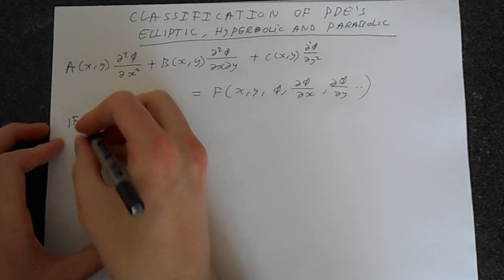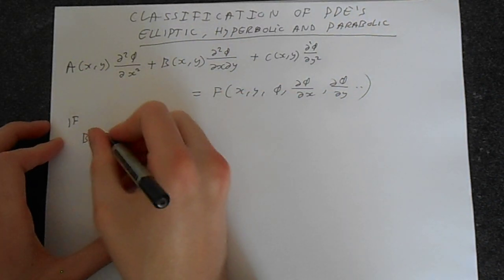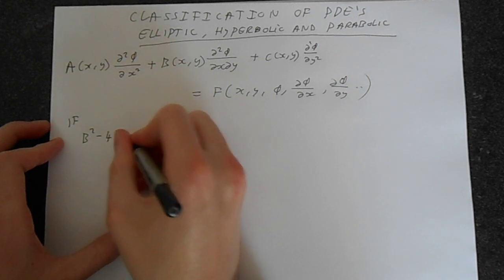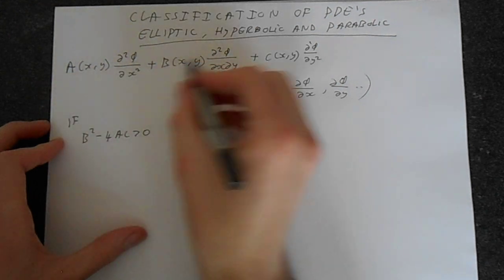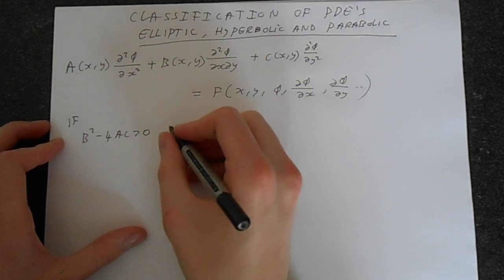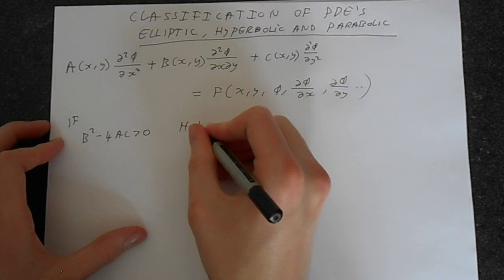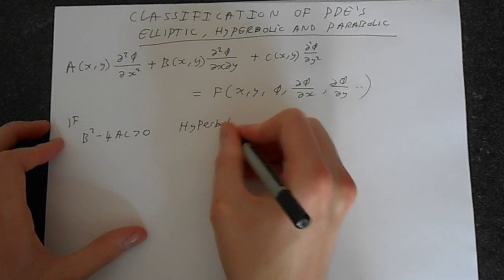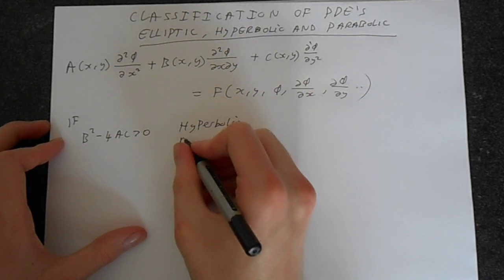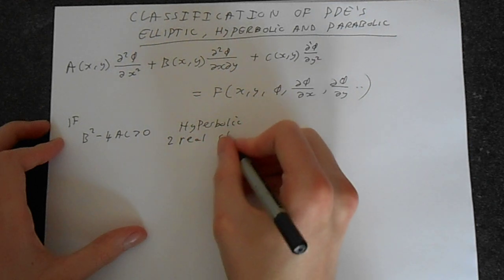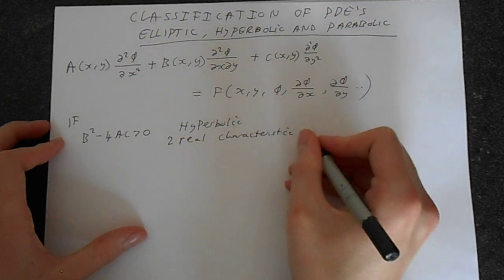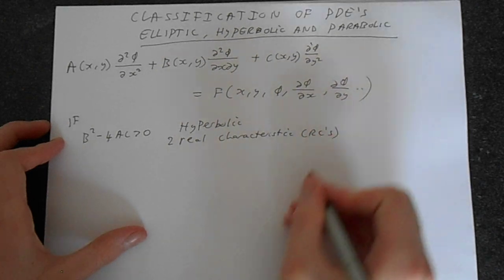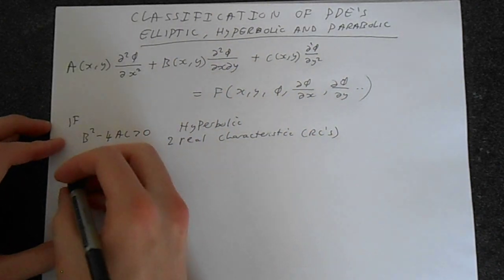So if b squared minus 4ac is greater than 0, so using these a, b and c here, if that's greater than 0 we have something that is hyperbolic and associated with this we'll have two real characteristics. And just for short, we'll just call these rc's, so I don't have to keep writing this out.